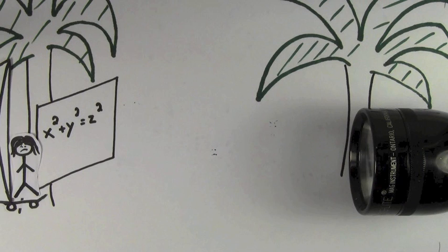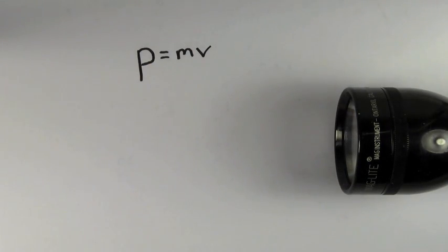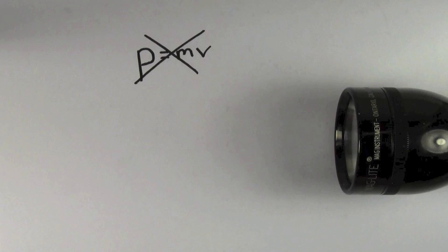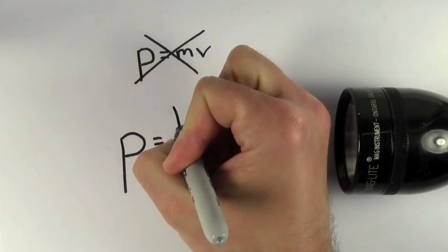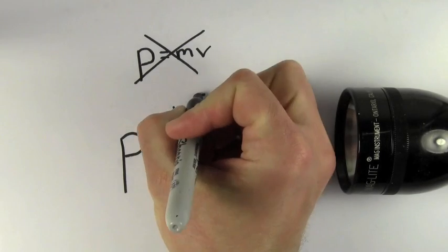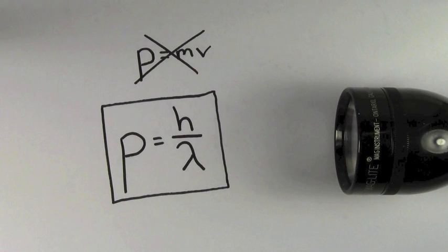Okay, so very long story short, you should never ever use p equals mv to find the momentum of a photon. To find the momentum of a photon, you should always use momentum equals h over lambda.